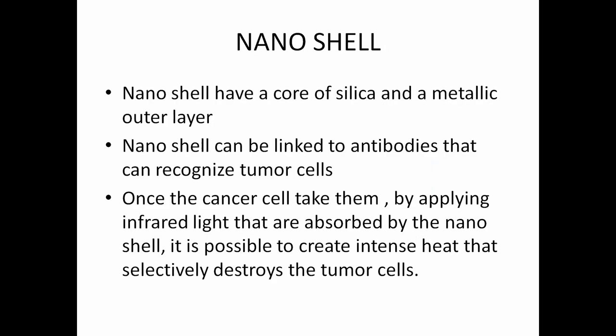Next is the nanoshell. Nanoshells have a core of silicon and a metallic outer layer. The nanoshell can be linked to an antibody that can recognize tumor cells. Once the tumor cells take them up, by applying infrared light the light is absorbed by the nanoshell, creating an intense heat that selectively destroys the tumor cells. Nanoshells are mainly used for tumor destruction using heat.